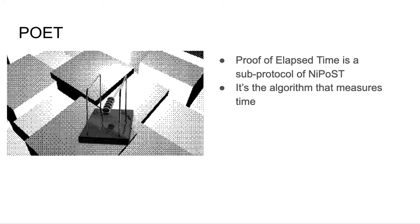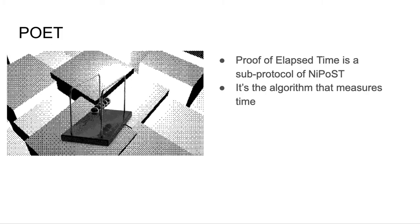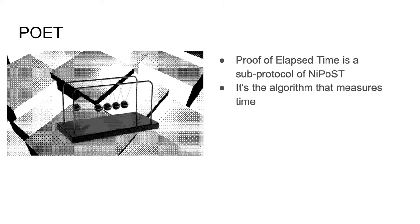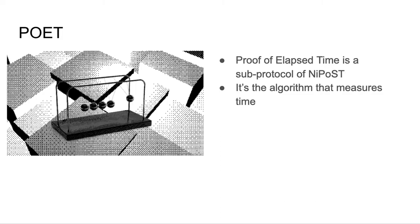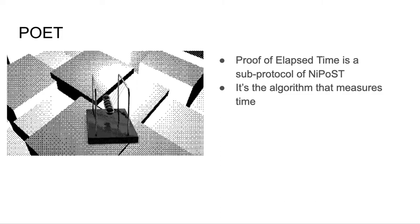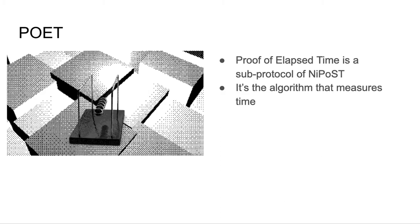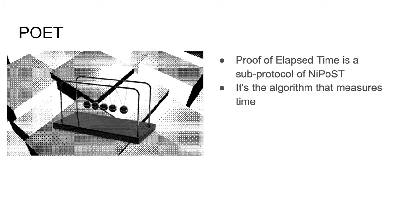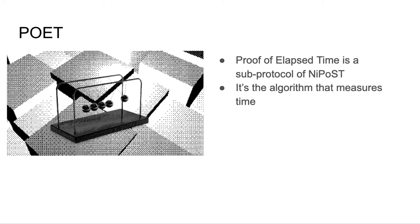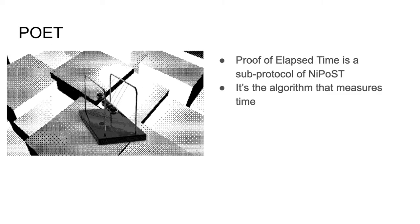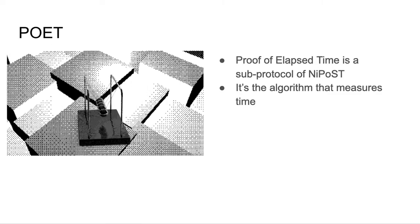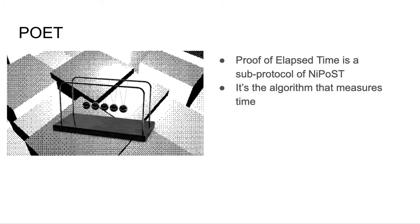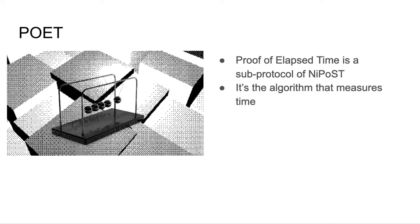Proof of elapsed time is a sub-protocol of NIPOST. It's the algorithm that measures time. Elapsed time is measured by iterating sequential work that takes a set amount of time to execute. The algorithm proves that it has worked sequentially for a predetermined number of cycles, thus proving that a period of time has elapsed during its entire execution. Proof of elapsed time is not run locally by a Smesher — users query continual proof of elapsed time servers, so the entire network may only need a small number of these servers.